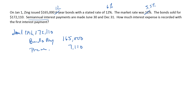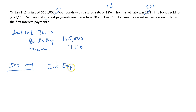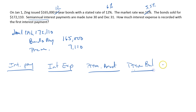We debited cash for the 172,110. That's the issuance. Now, what we need to do is amortize this, and of course we should prepare a table to help us figure this out. The first column of the table is the amount for the interest payment, then we have a column for the amount of interest expense, then since this is a premium I'll have a column for premium amortization, then a column for the premium balance, and then a column for the bond carrying value.